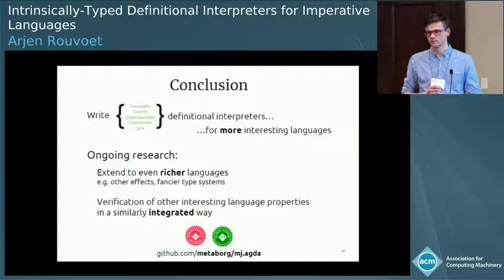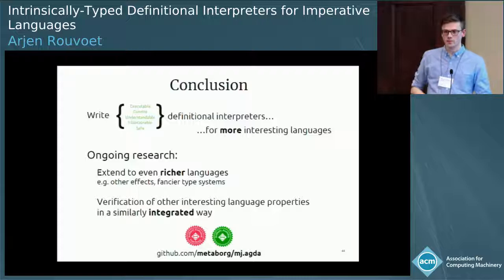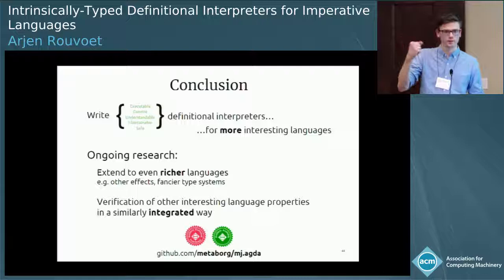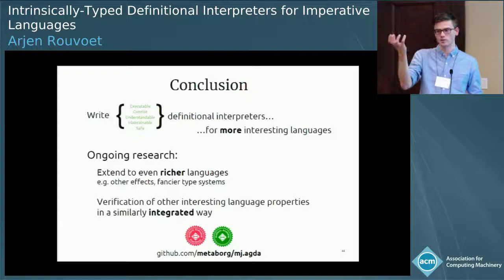Q from online: How do you know where to use the caret operator? A: Every time where you hold a value that is indexed by this heap type and you want to use it across another bind — that's the strong operator. So you have to use it every time you want to carry a value that is indexed by this heap type and use it across another bind.